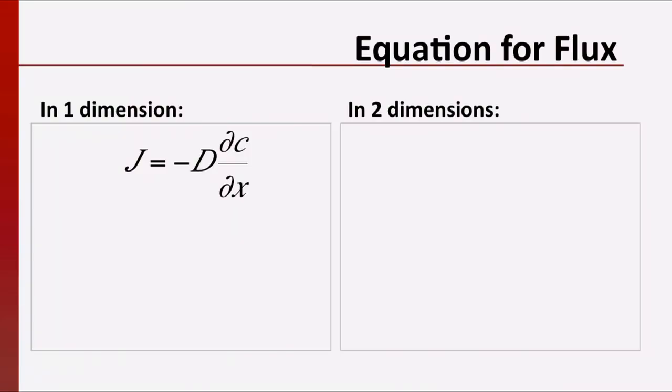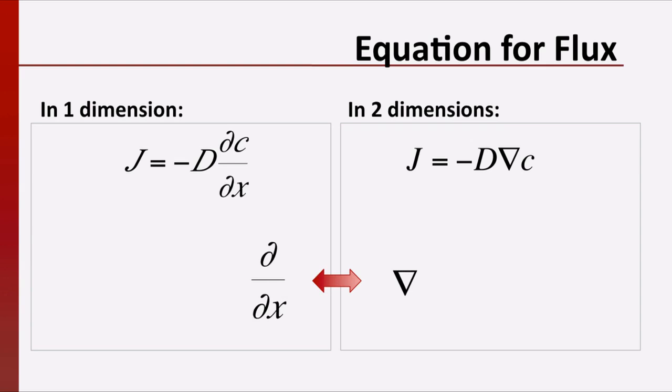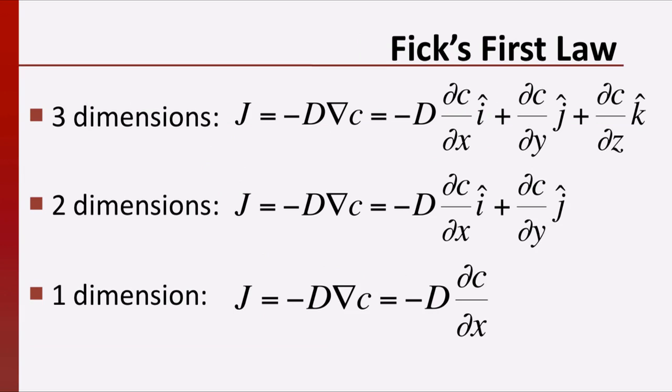The equation that describes this says that the flux J is equal to some constant, which we'll call D, times the negative gradient of the concentration. Compare this to the equation we had in the one-dimensional example. Here, the derivative is replaced by the gradient because the derivative is the one-dimensional analogue of the gradient. This equation is one form of Fick's first law. It says that flux points along the negative gradient of the concentration. It turns out that this equation describes the flux of many familiar quantities.